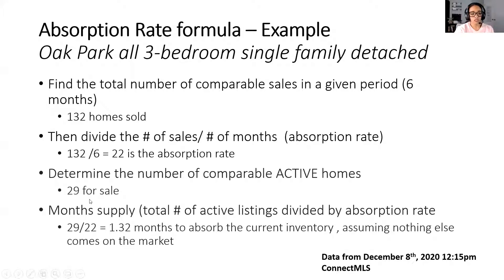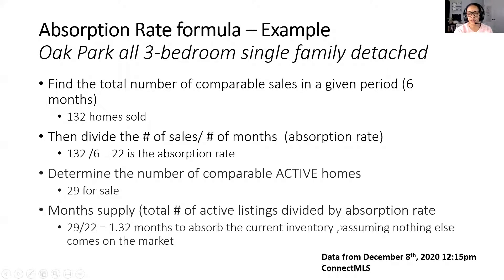The next thing you need to do is determine the number of comparable active homes. In Oak Park for three-bedroom single-family detached, inventory is way down — there are 29 homes for sale. I did not include under contract. These are actively for sale, not under contract, not pending. To get the months supply, you take the total actives — 29 — and divide by the absorption rate of 22. So 29 divided by 22 is 1.3 months to absorb the current inventory, assuming nothing else came on the market. That means we're in a seller's market — three months or less is a seller's market.